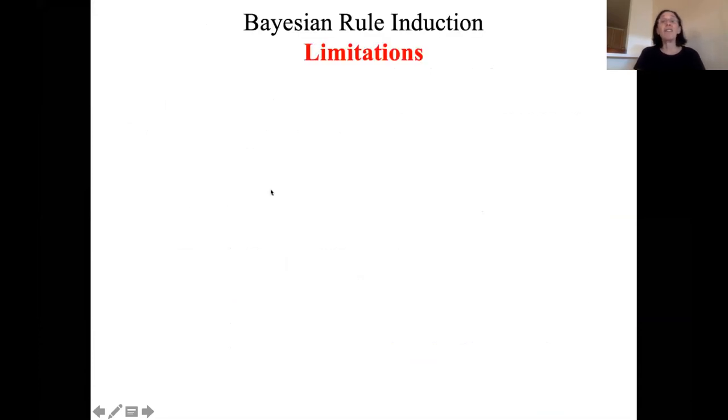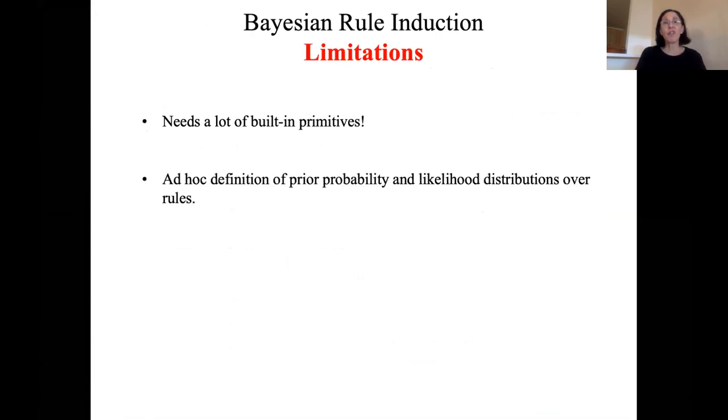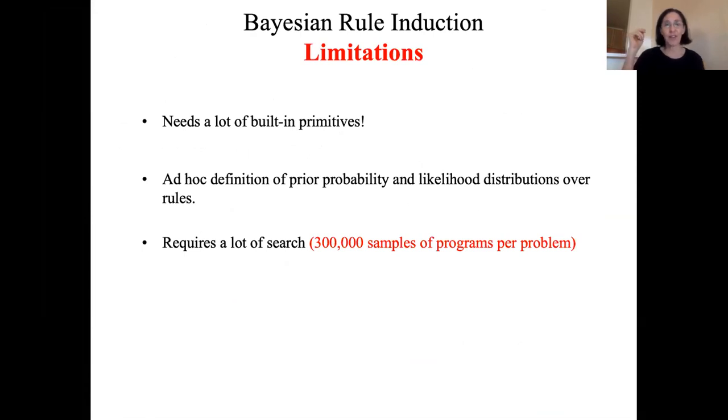Of course, this has a lot of limitations. You need a lot of built in primitives and this sort of grammar. There's also a rather ad hoc definition of the prior probability and likelihood distributions. And it requires a lot of search. They had to sample about 300,000 different rules or programs per problem. There are ways to deal with this search problem, but we still have the issue of how do we decide what primitives to build in. And it's not clear again that this can scale easily to more complex problems.